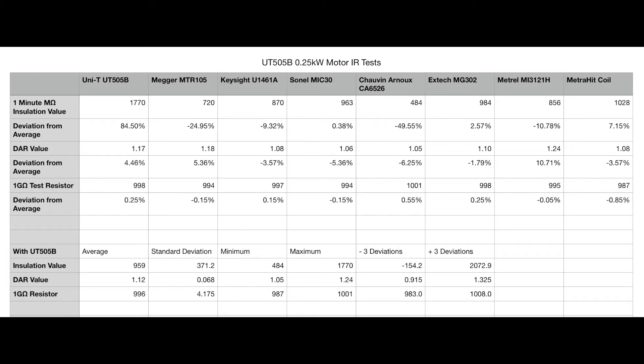We've got a spread there of 10.8% for the Metrel, and then the lowest one is minus 6% again for the Chauvin Arnoux unit. Interestingly enough, I did also test each of the instruments out on a 1 gigaohm test resistor. You can see the results for that test in those bottom two lines and the deviation from its average. There we have much tighter results. Our Chauvin Arnoux is 0.55% above, and the lowest one is minus 0.85% for the Metrel HT. You see a much tighter set of results for a resistance value than you do for an actual motor winding.